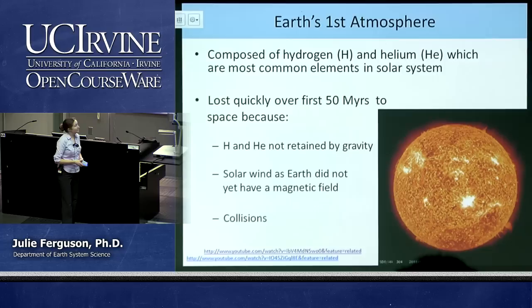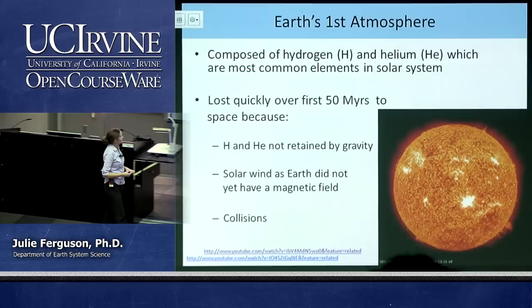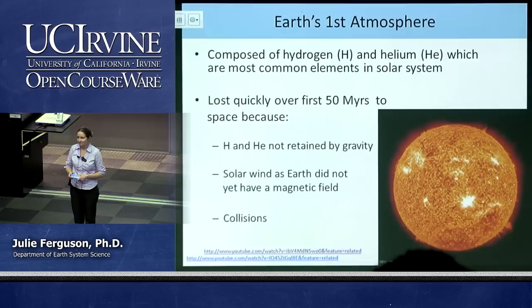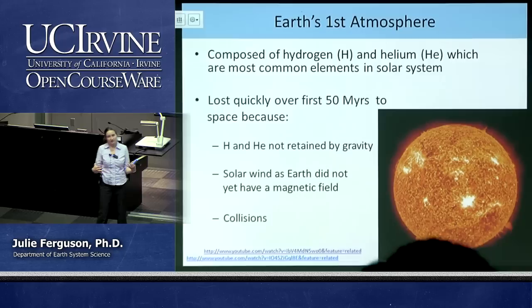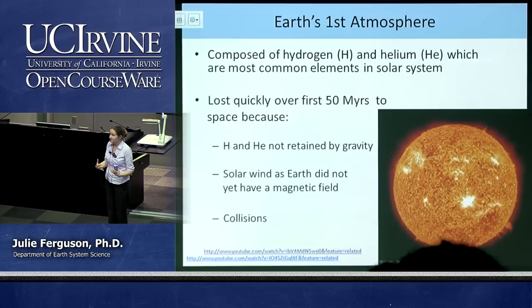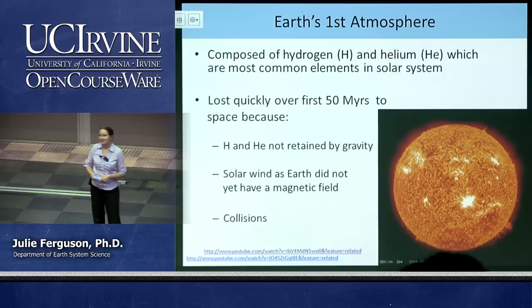Jupiter managed to keep its hydrogen and helium because its gravity is much stronger. But here on Earth, we're losing hydrogen and helium — which is why you have to make the most of your helium balloons, because that helium, once it escapes into the atmosphere, is gradually being lost out to space even today. Interestingly, we get helium from the ground — we mine it. Our helium supplies are finite, which is a concern because we need liquid helium to operate medical machinery. The question is whether we should be using it for somewhat frivolous purposes like helium balloons.